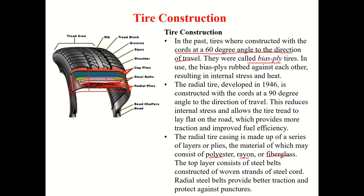As shown here, there are radial plies, then the steel belt. Above that are cap plies, followed by the shoulder, sipes, grooves, tread blocks, and ribs. The whole outer portion is called the tread area.